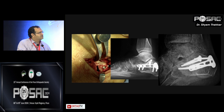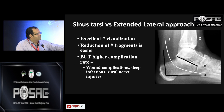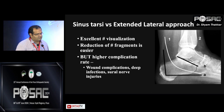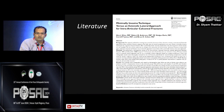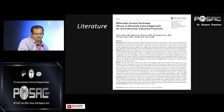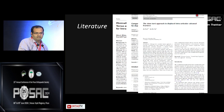An important step is to check Broden's views intraoperatively. The skin markings show the superficial peroneal nerve as white line 2 and the sural nerve as white line 1. Incision A is for lateral extensile and incision B is for the sinus tarsi approach. In the lateral extensile approach there is a risk of sural nerve injury, whereas the sinus tarsi approach avoids injury to important structures. Literature supports that sinus tarsi has fewer wound complications, no nerve injury, and equivalent radiological outcomes compared to lateral extensile.